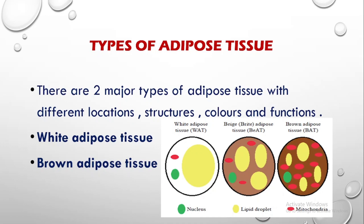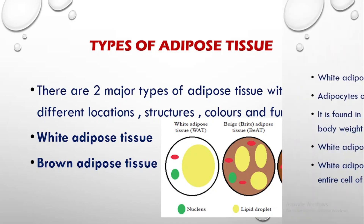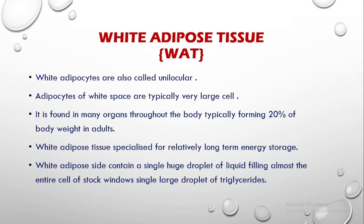Adipose tissue is classified into two major types according to its location, structure, color, and functions. We have white adipose tissue commonly called WAT and brown adipose tissue commonly called BAT. As you can see in this diagram, white adipose tissue is white in color and brown adipose tissue is brown in color. Somewhere in between is beige adipose tissue, also known as BEAT. White adipose tissue has a big fat droplet, with fewer mitochondria, whereas brown adipose tissue has plenty of mitochondria and therefore produces a lot of energy, and is found mostly in newborns and children.